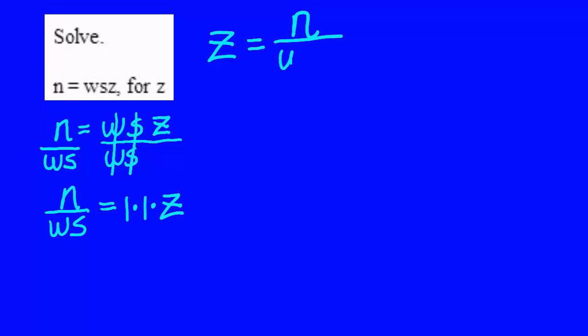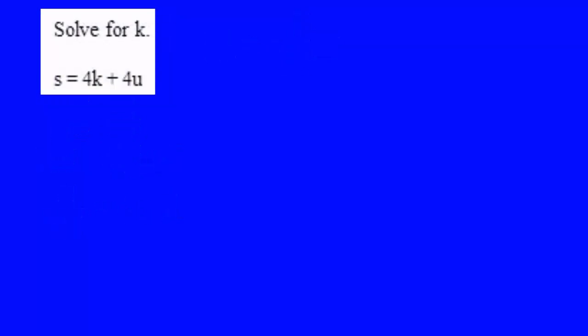We now have created a new formula. Let's try another. k is acting like x, and all the other letters and numbers are acting like numbers. So, we need to solve first for 4k.